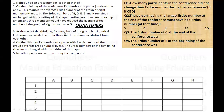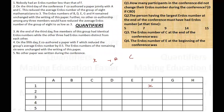Nobody had an Erdős number less than F, so F had the smallest Erdős number — let's call it x. On the third day of the conference, F co-authored a paper jointly with A and C. Since F is having Erdős number x, A and C will co-author with him and their Erdős number will become x plus one.